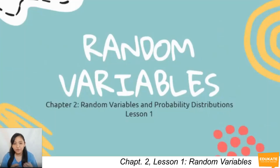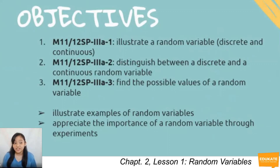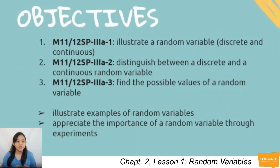Our lesson for today, we're now moving on to Chapter 2, which is Random Variables and Probability Distributions. Our lesson is Random Variables, Lesson 1. The objectives we are planning to hit for today are: to illustrate a random variable, discrete and continuous; distinguish between a discrete and a continuous random variable; find the possible values of a random variable; illustrate examples of random variables; and appreciate the importance of a random variable through experiments.